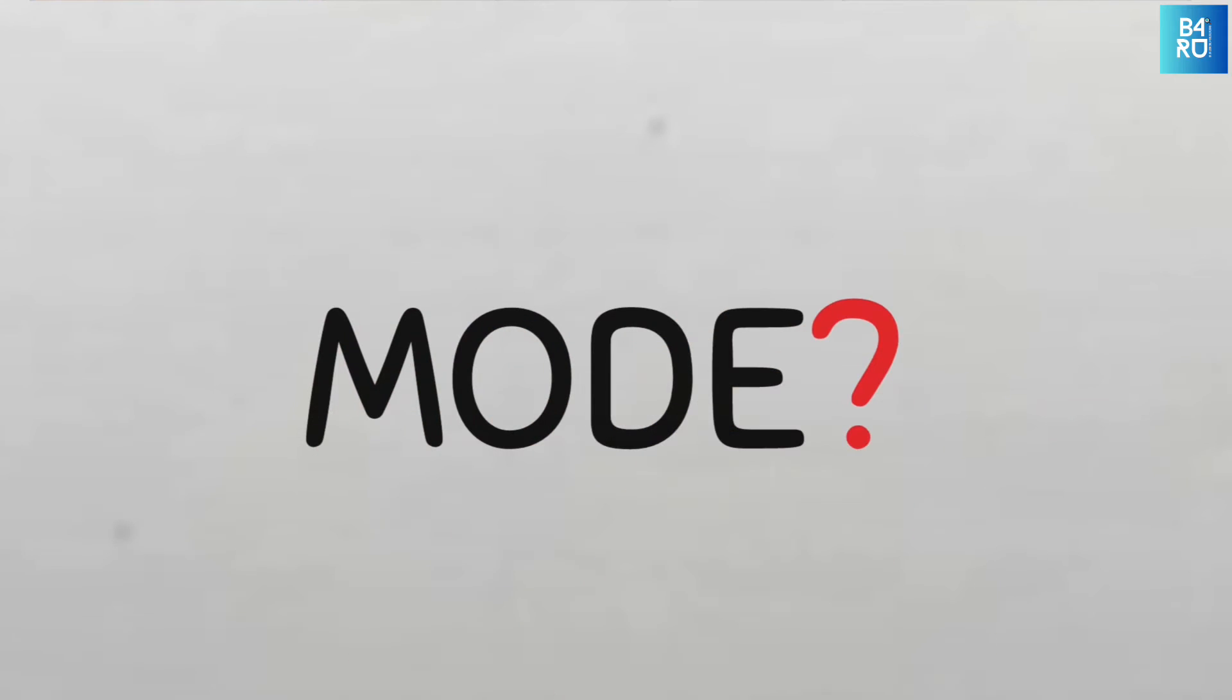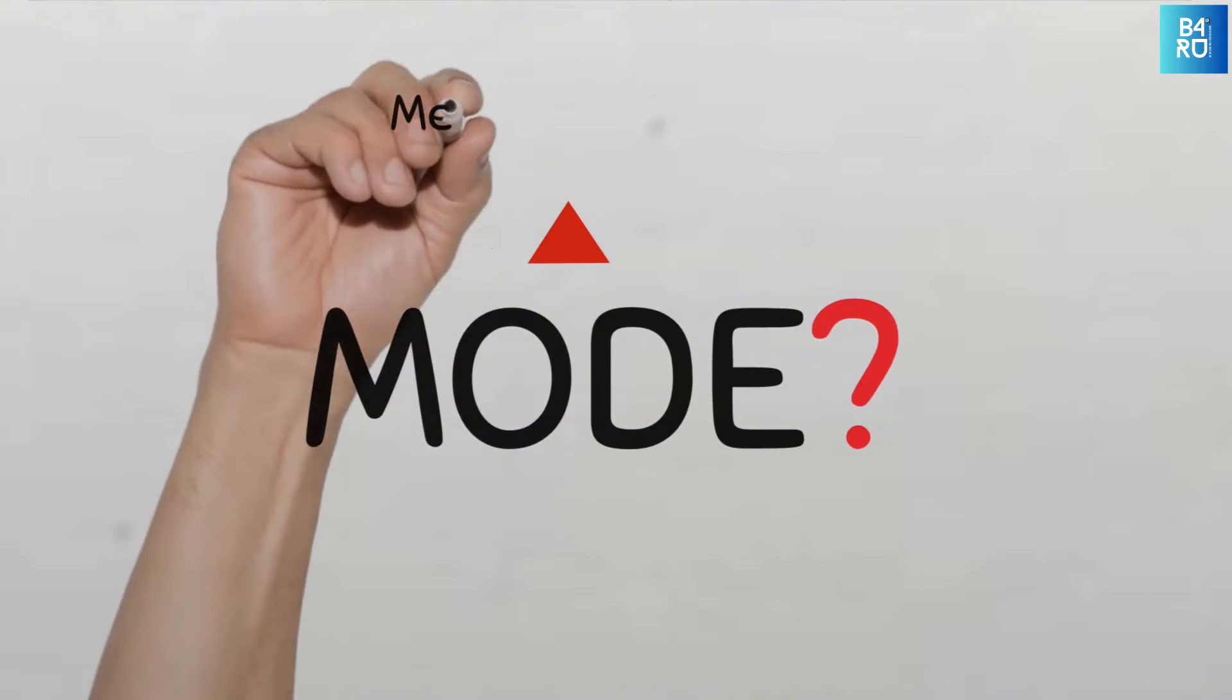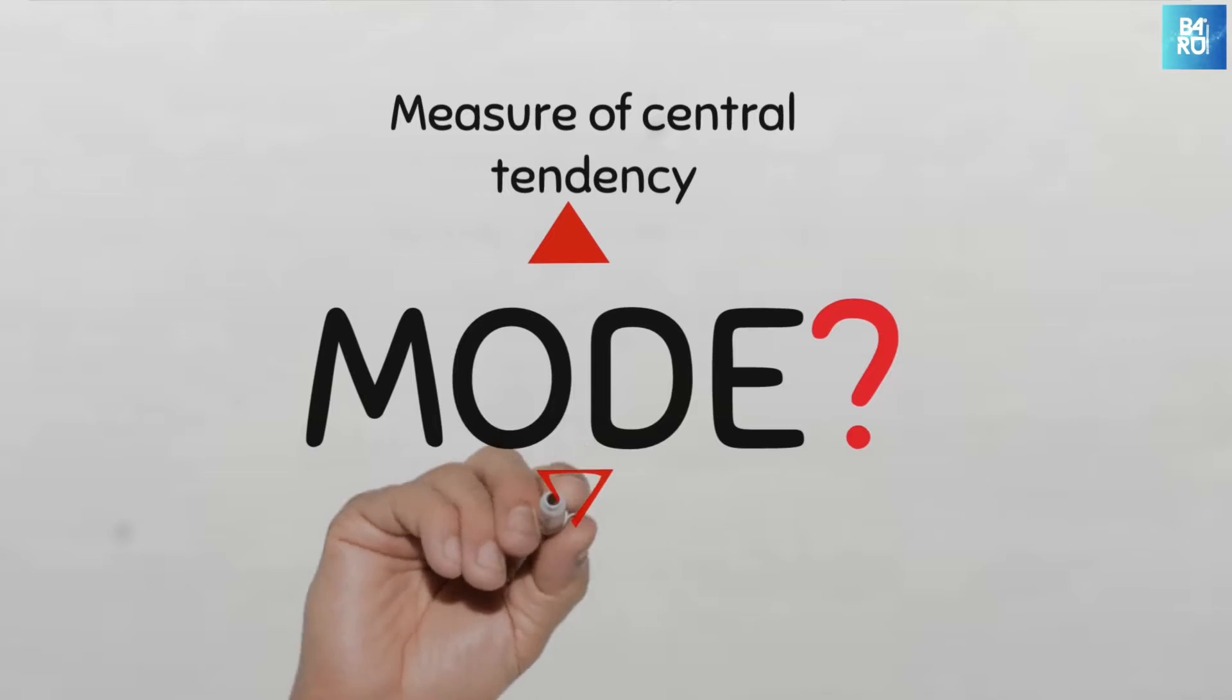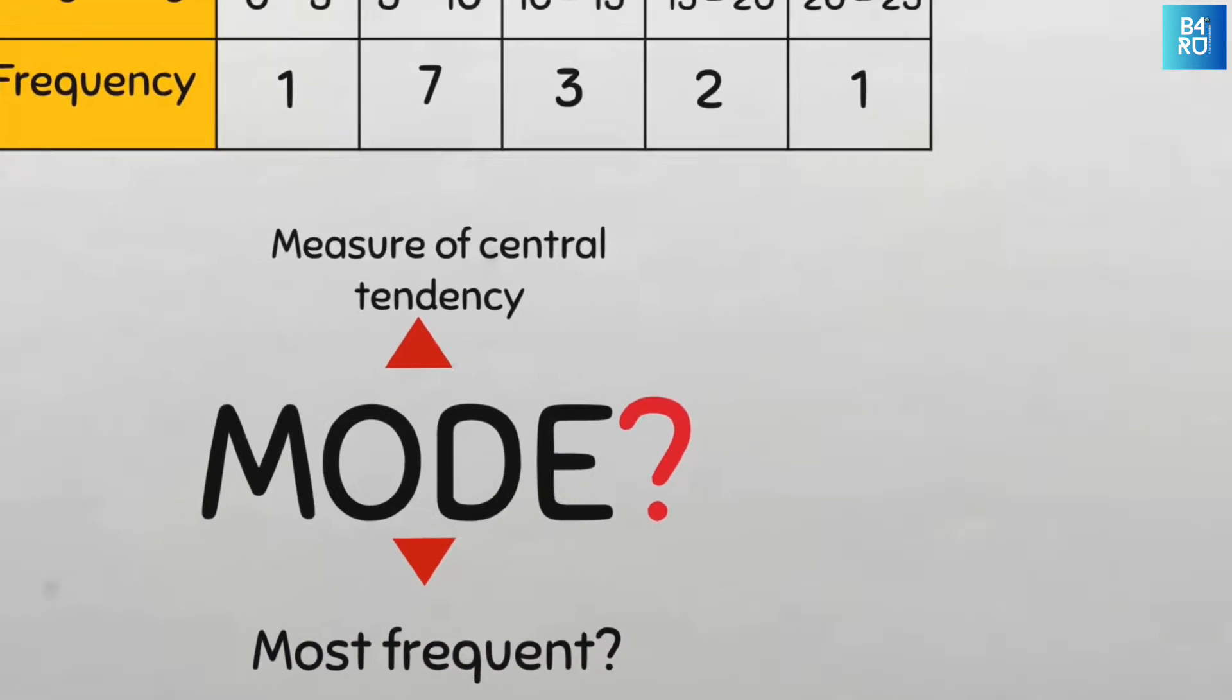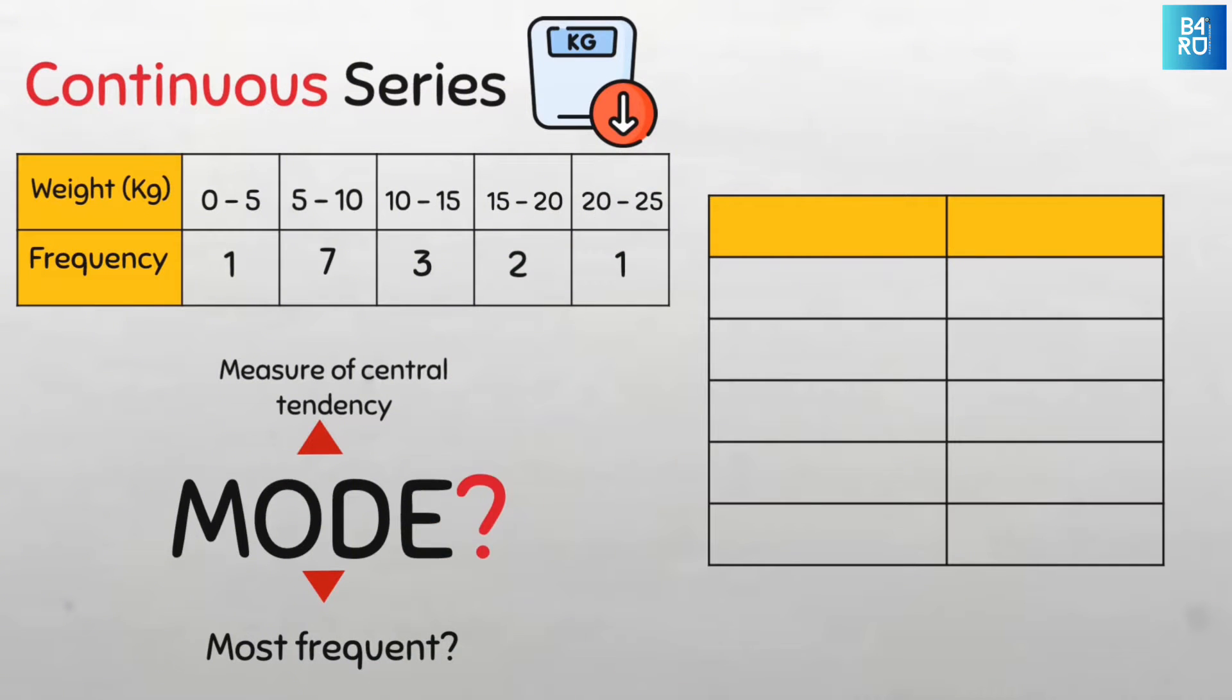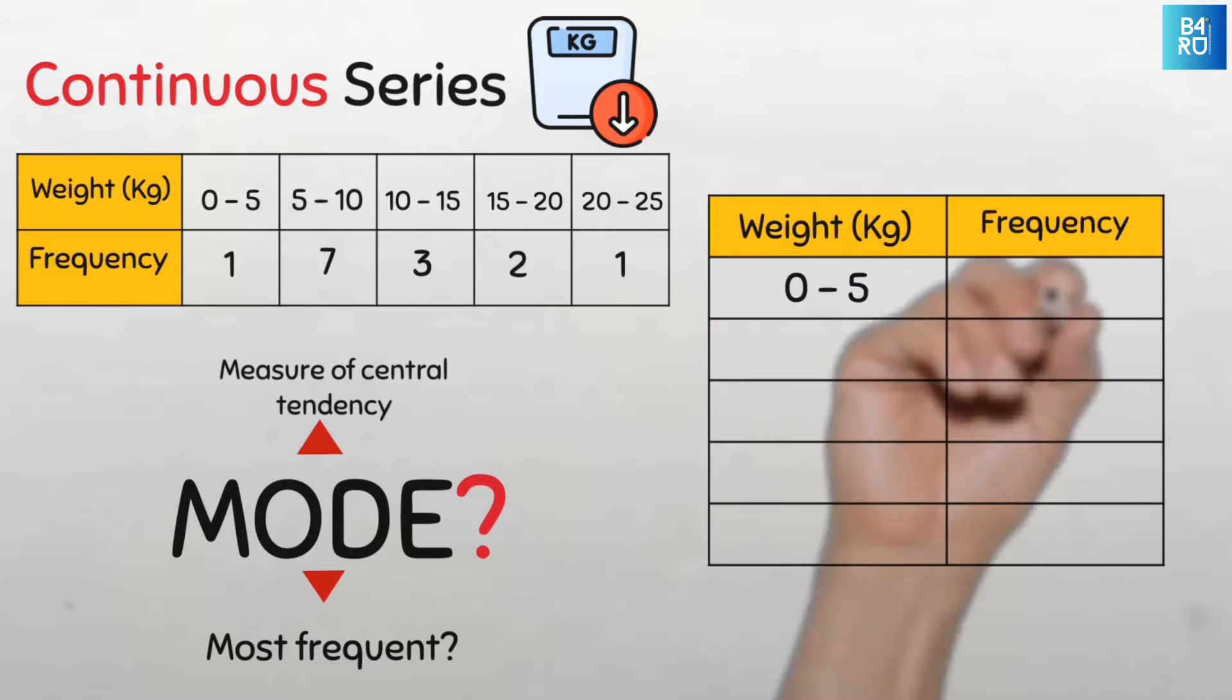Recall that the mode is a measure of central tendency that indicates the most frequent value, so we'll be looking for the most frequent. Let us modify this table a bit to make it easier for us to compute the mode. So let's place the weights in kg here and the frequency here, and then we have all the data arranged neatly in a vertical manner.